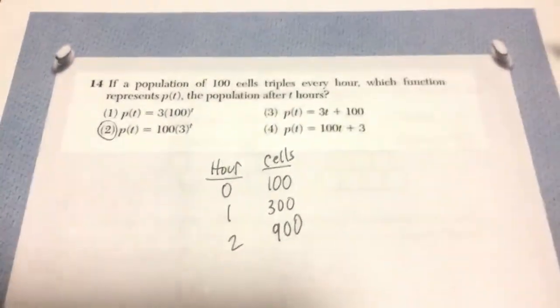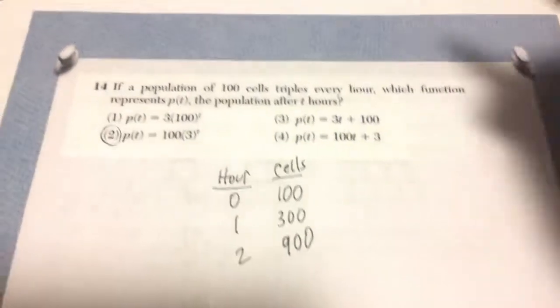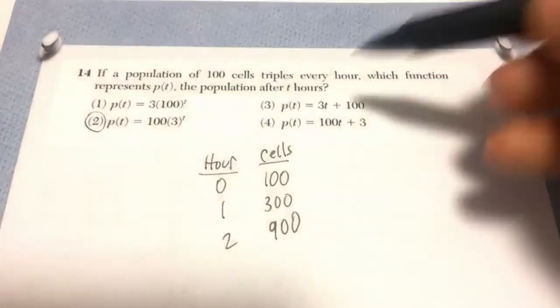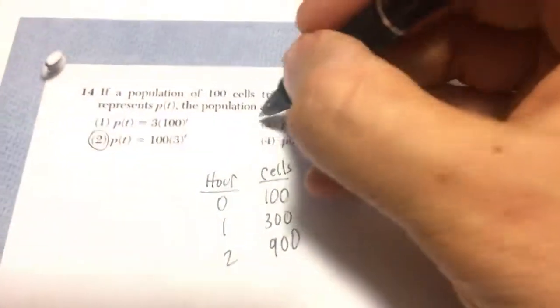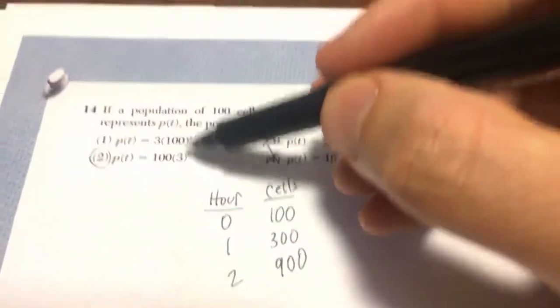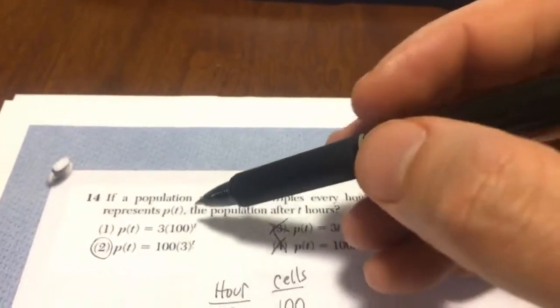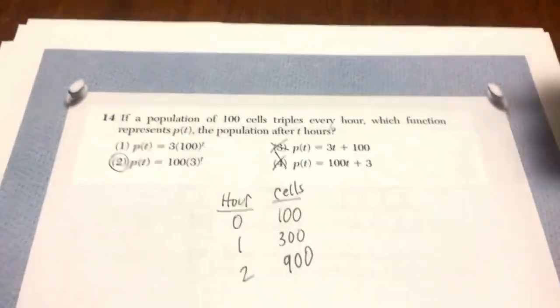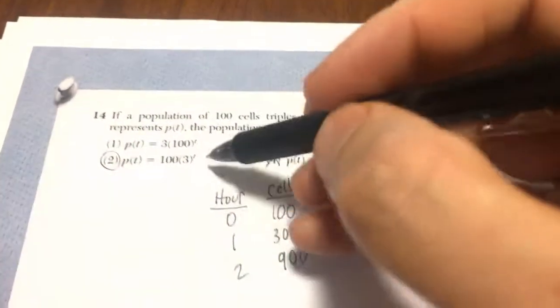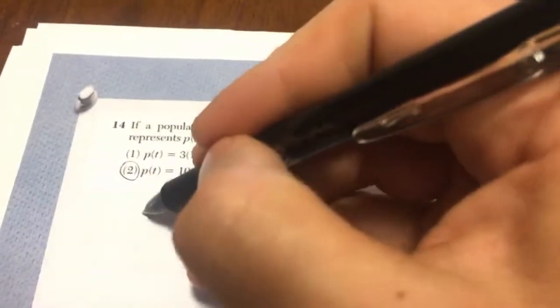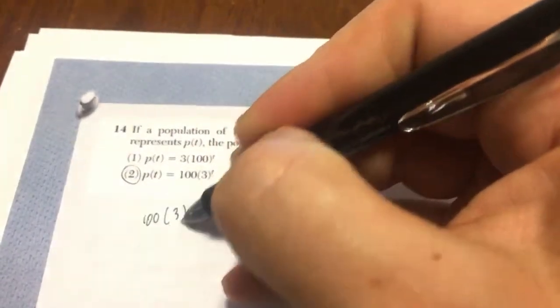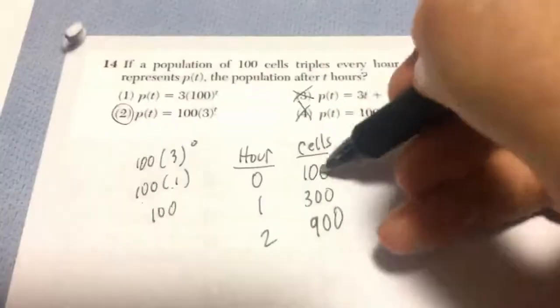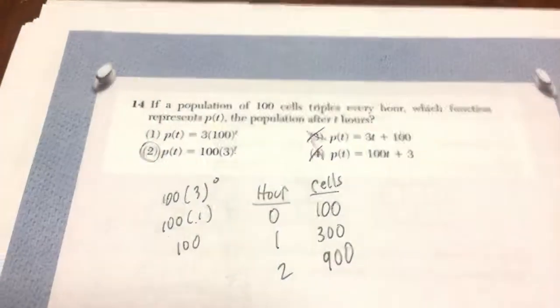In number 14 you're talking about a number of cells that triples every hour. Anytime you see triples or doubles or multiplies by something, you can usually think of exponential growth. Both of these are linear equations so I'm going to cross these off. These are both exponential equations and I know that because they both have x as the exponent, or t as our variable. Okay, so basically if I put in 0 for my exponent, I have 100 times 3 to the 0. 3 to the 0 is 1, and 100 times 1 is 100. Okay, so my answer is choice number 2.